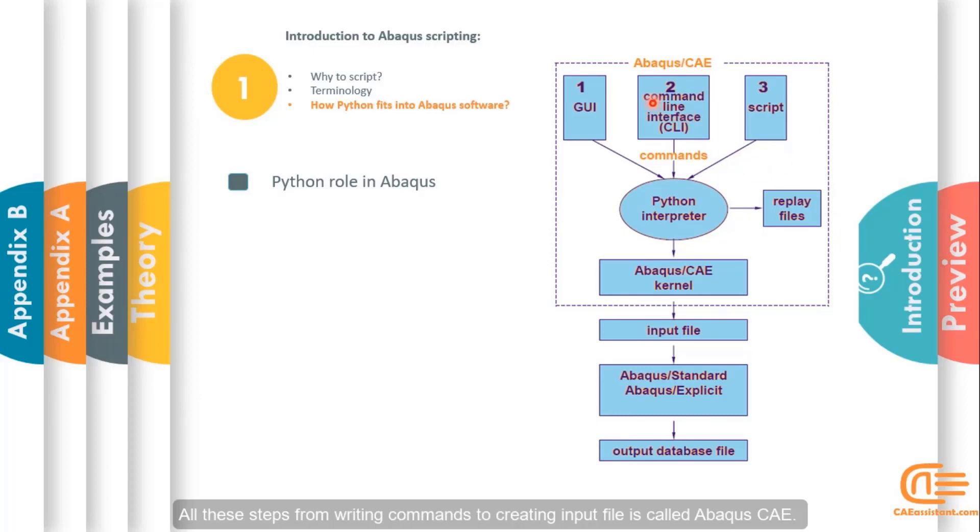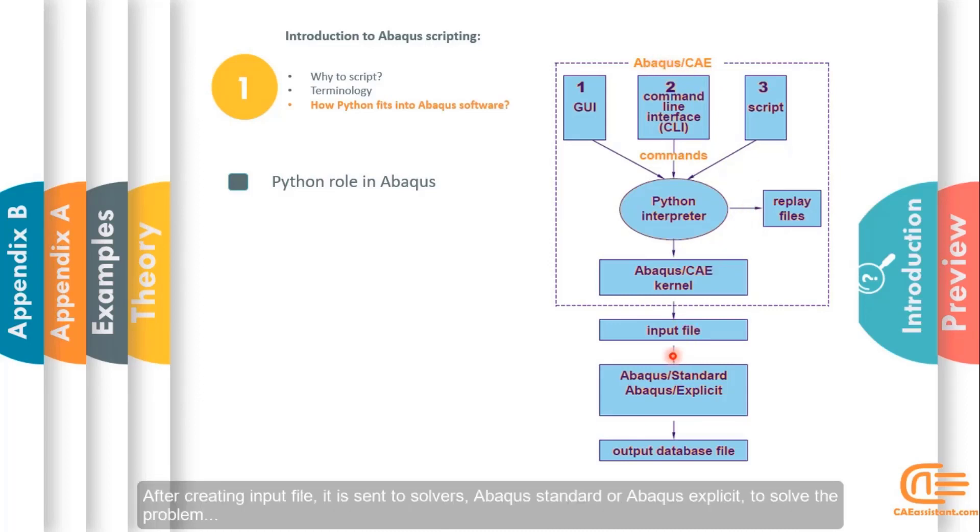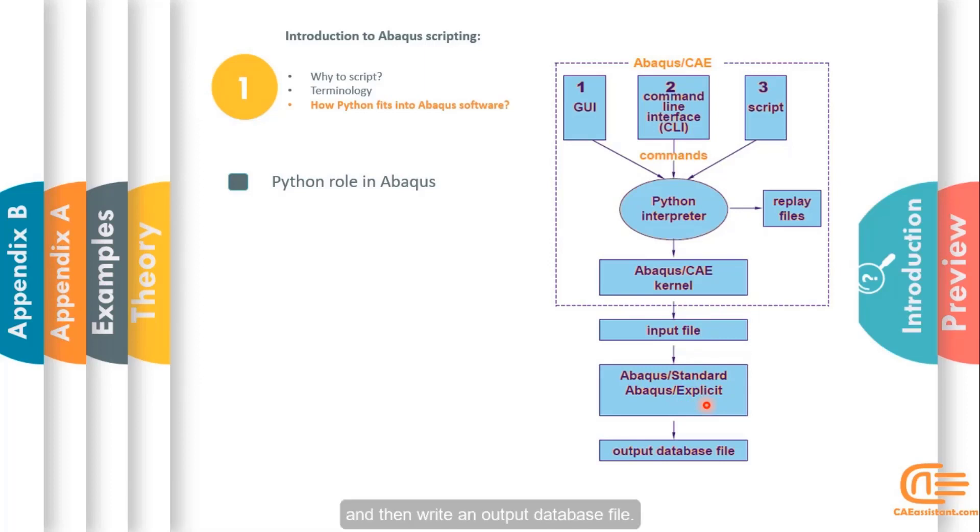All these steps, from writing commands to creating input files, is called Abacus CAE. After creating the input file, it is sent to solvers, Abacus standard or Abacus explicit to solve the problem and then write an output database file.